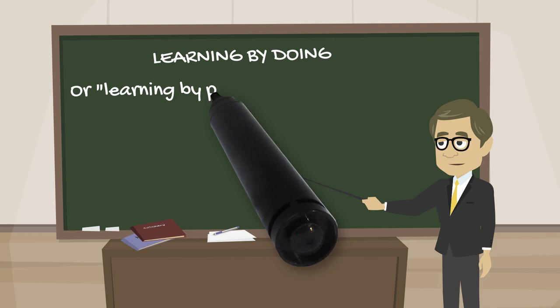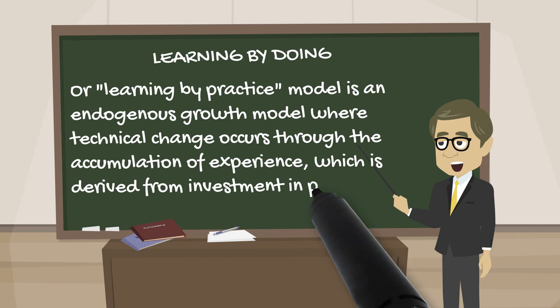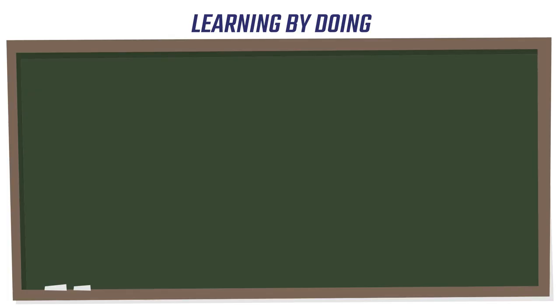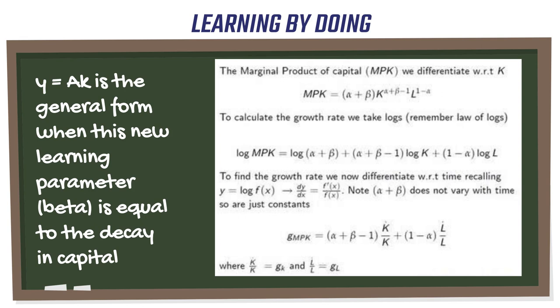Arrow's later research translated simple ideas into elegant mathematics, which other economists extended into unanticipated directions. One of those notions was learning by doing, an idea that Arrow examined in the early 1960s. The basic idea was that the more a company produced, the smarter it got. Decades later, economists incorporated this idea into sophisticated theories of endogenous growth, which state that economic growth depends on internal company policies that promote innovation and education.